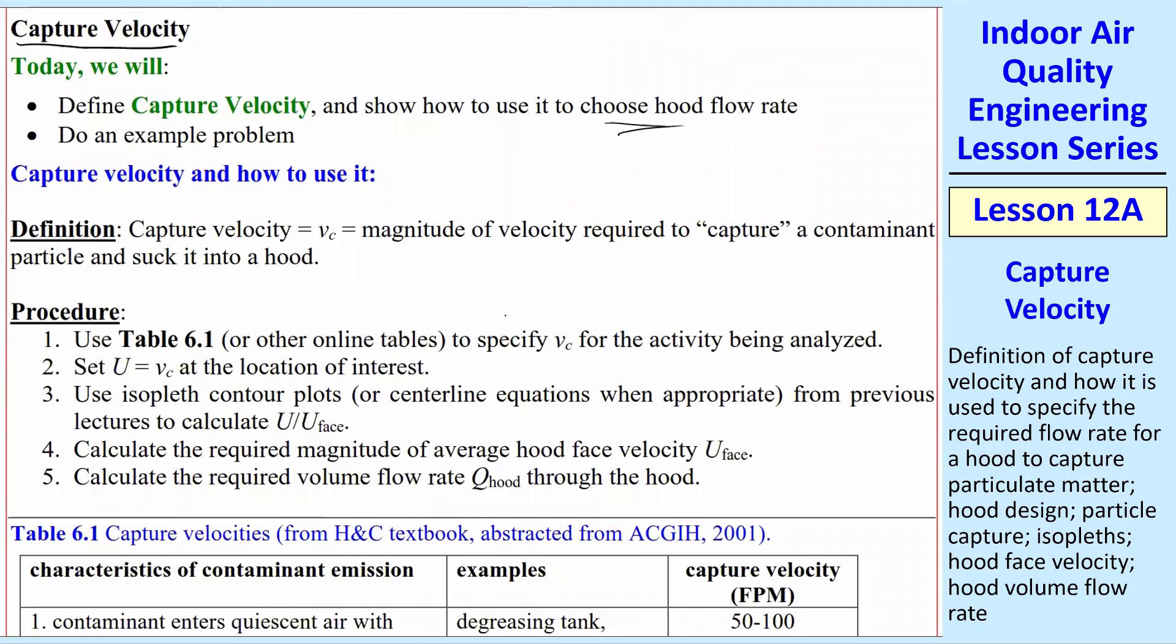We'll define Capture Velocity first of all. It's actually the magnitude of velocity, so it's really a speed, but people don't distinguish properly between velocity and speed. But it's the required magnitude of velocity to capture a contaminant particle. We're talking about particles here. These also include little droplets, so paint droplets or welding fumes, which are not solid particles. They're liquid, but they're still called particles.